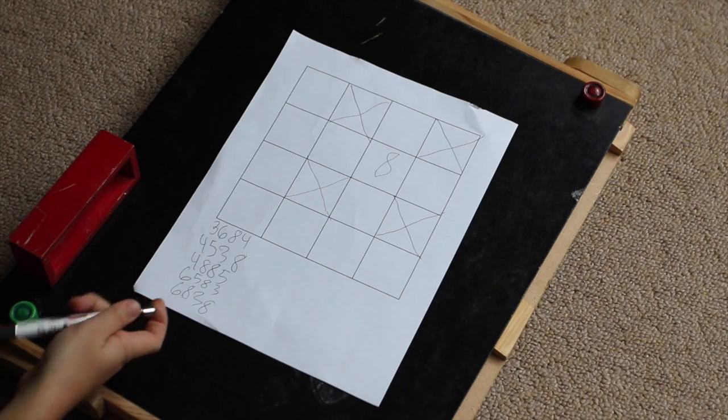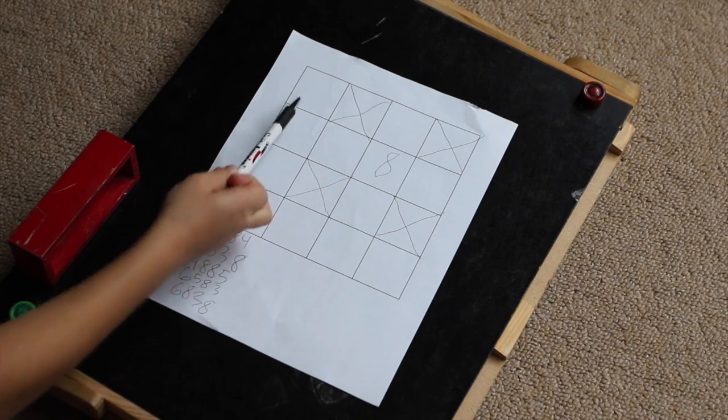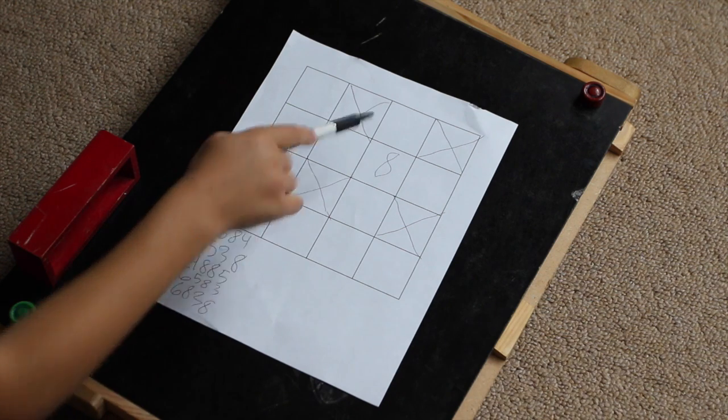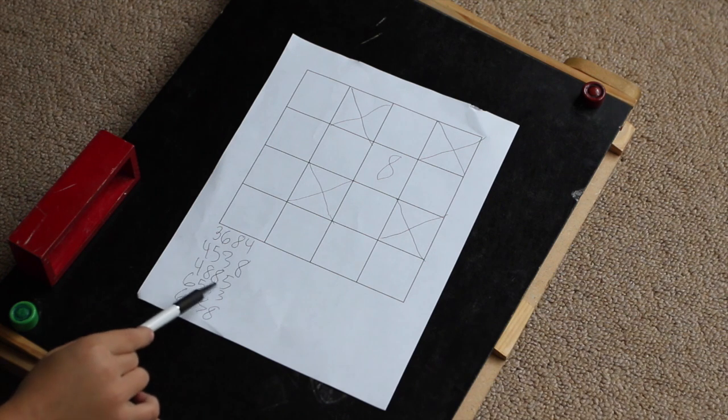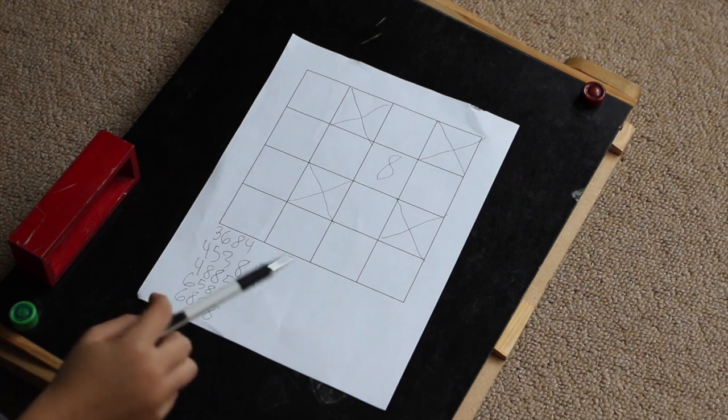But the complicated way uses 4 digit numbers. You can see that there are some things different with the complicated version. Only 4 squares are blocked out and now we're using 4 digit numbers which we are going to rule out.